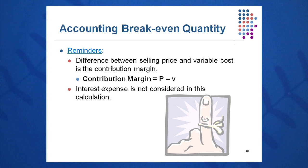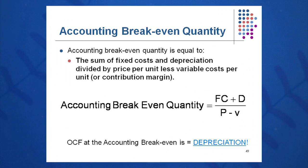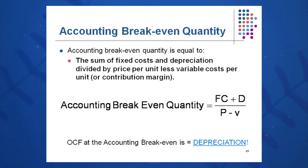A reminder: contribution margin is P minus V. It's in the denominator of all these equations, and we don't take interest expense into account in this calculation. Accounting breakeven quantity equals fixed cost plus D over P minus V — taking the general formula of fixed cost plus OCF over P minus V. Going back to ABCD company at accounting breakeven, we can prove that OCF equals depreciation. Using the traditional method — EBIT plus D minus T — we get zero plus 200 minus zero, so OCF equals depreciation of 200. Key point: OCF at the accounting breakeven is equal to depreciation. Put that in your notes and put a star next to it.